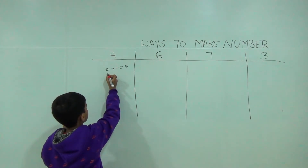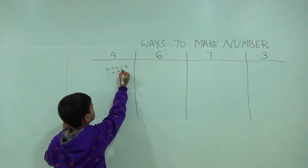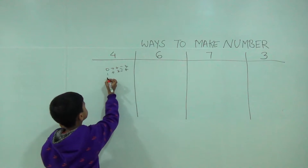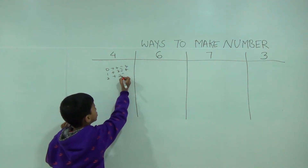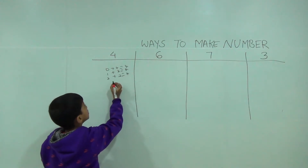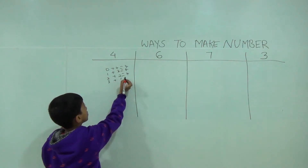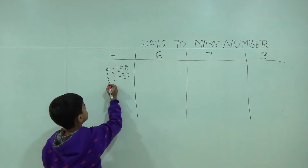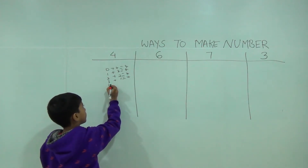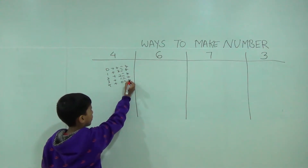Zero, zero plus four is equal to four. One plus three is equal to four. Two plus two is equal to four. Three plus one is equal to four. Four plus zero is equal to four.